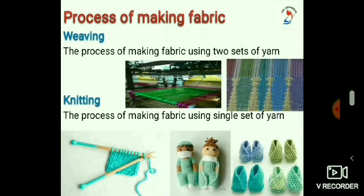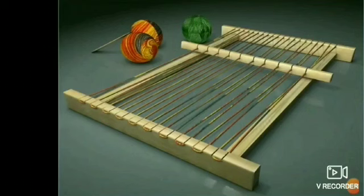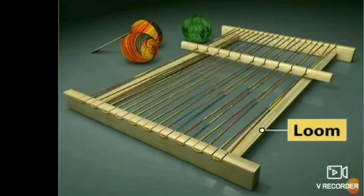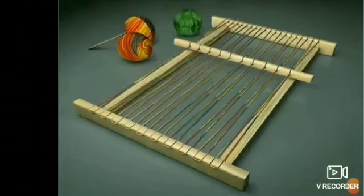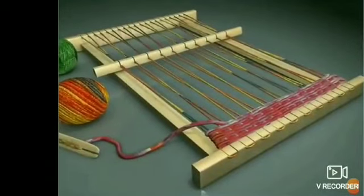After fiber has been spun into yarn, it is sent to mills to be made into cloth. Weaving and knitting are the two methods of making yarn into fabric. Weaving is the arrangement of two sets of yarn to make fabric. During weaving, initially one set of yarn is fitted on a loom. The other set of yarn is interlaced at right angles with the first set of yarn so as to get fabric.